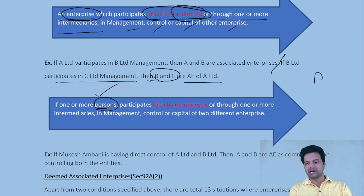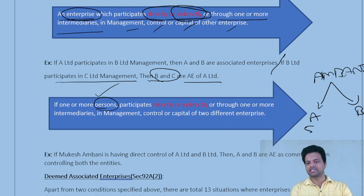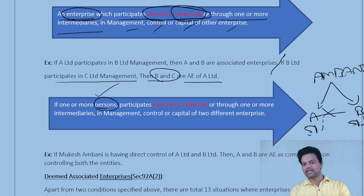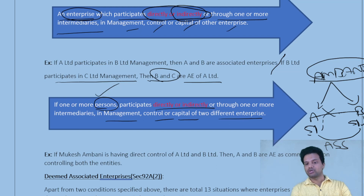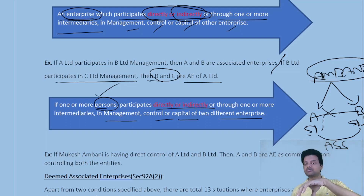For example, Mukesh Ambani invested in two startups — Startup A and Startup B — purchasing 51% stake in both companies. Even though there is no direct relation between Company A and Company B, they are still said to be associated enterprises because there is a common person holding stake in both companies. That is point number B.